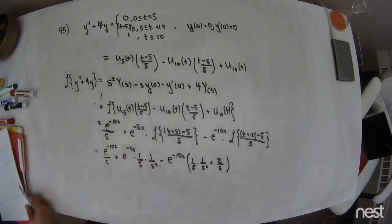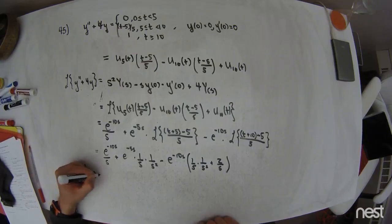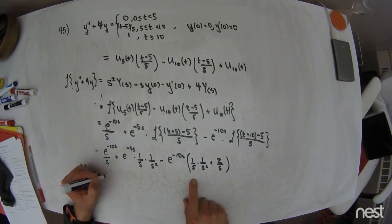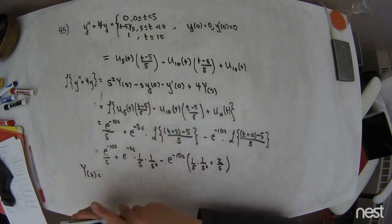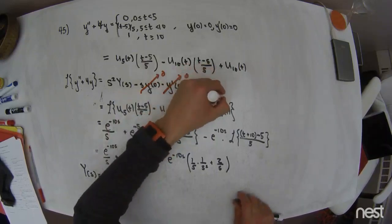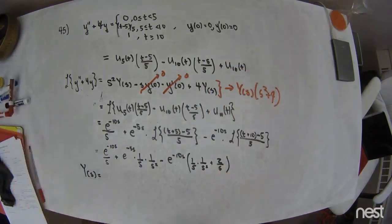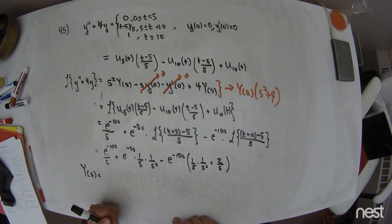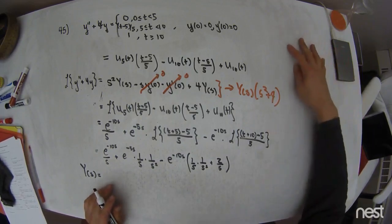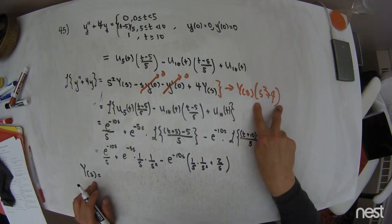At this point I need to do some partial fraction decompositions, but first I need to solve for capital Y(s). Since y(0) = 0 and y'(0) = 0, the left side reduces to Y(s)·(s² + 4). Solving for Y(s), I divide the whole equation by (s² + 4), so each term on the right will have s² + 4 in the denominator.